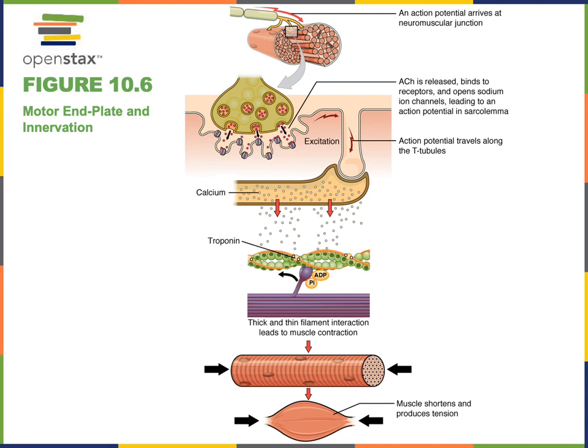This will stimulate an action potential by activating voltage-gated ion channels. The action potential is an electrical impulse that spreads through the skeletal muscle fiber, traveling along the sarcolemma as ions rush in and out of the skeletal muscle fiber. The transverse tubules are important to help the action potential travel deep within the skeletal muscle fiber.